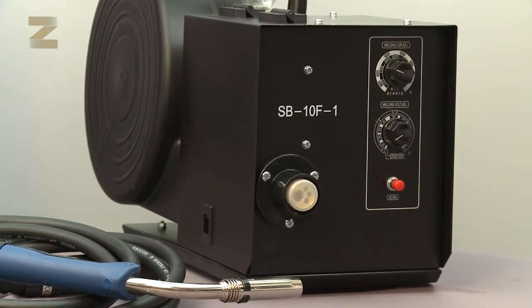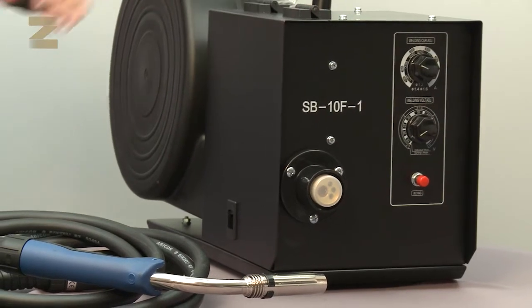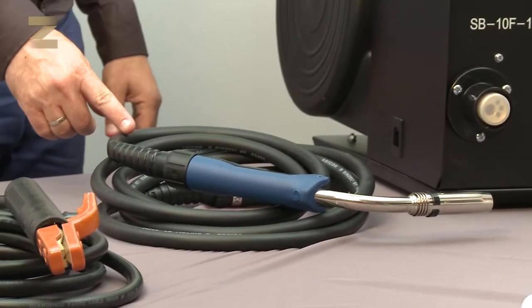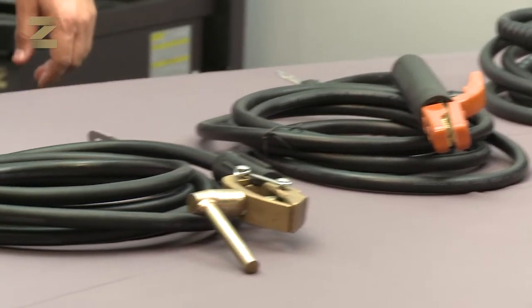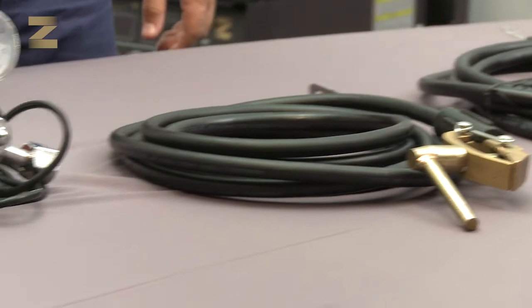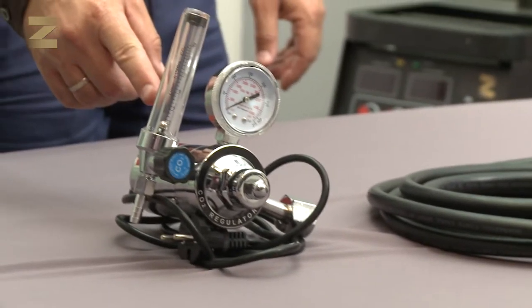The kit contains the MiG-500 machine, a set of cables and handle for MiG welding, a set of cables and handle for electrode welding, an earth clamp and one and a half meter cable, and a CO2 regulator.